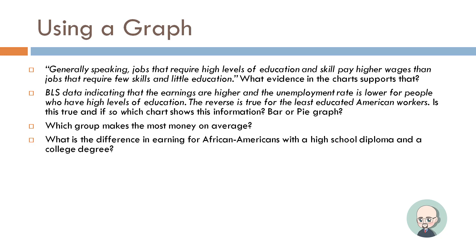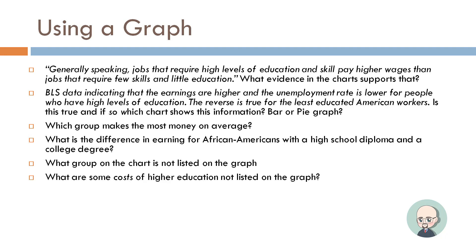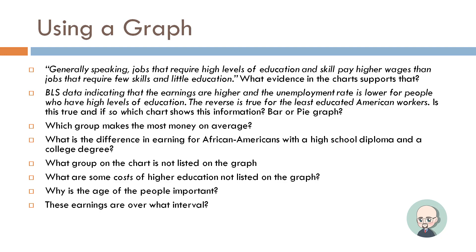Which group makes the most money on average? What is the difference in earnings for African Americans with a high school diploma versus a college degree? What group on the chart is not listed on the graph — what's in Chart A but not Chart B? What are some costs of higher education not listed on the graph? Why is the age of the people important? These earnings are over what interval of time? Why do you think these earnings differ by group? Pause the video and find the support in the charts to answer these questions.